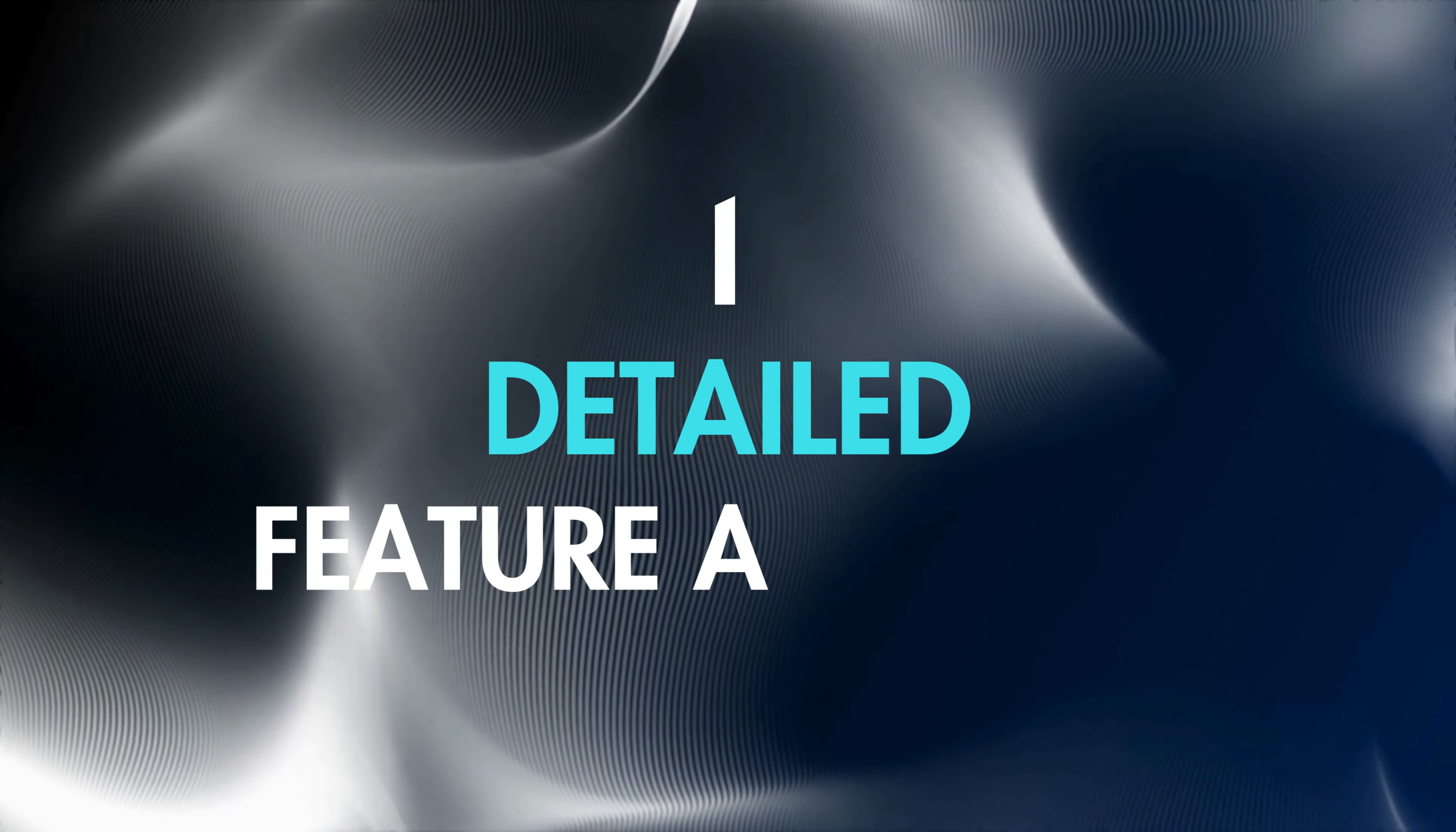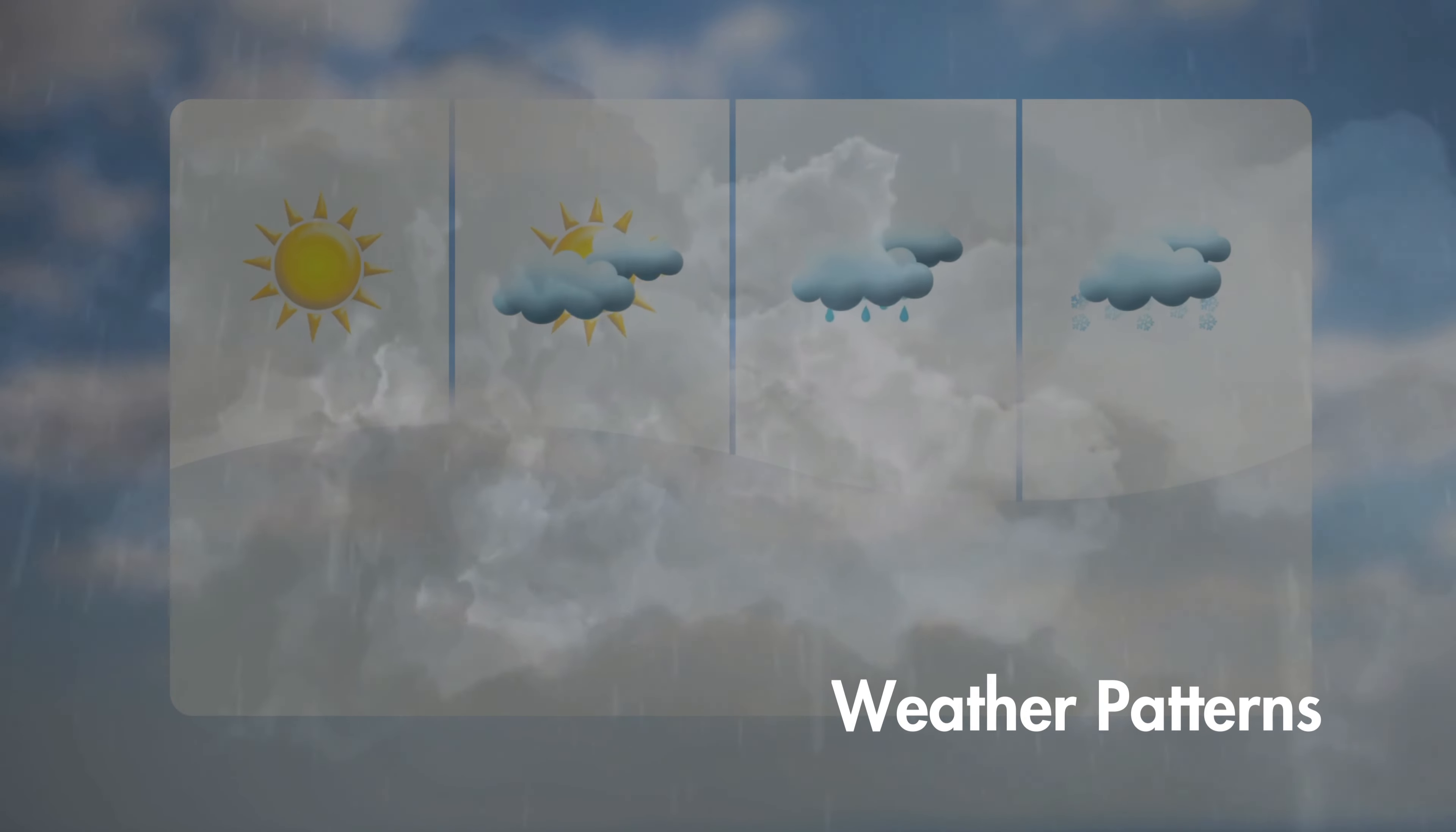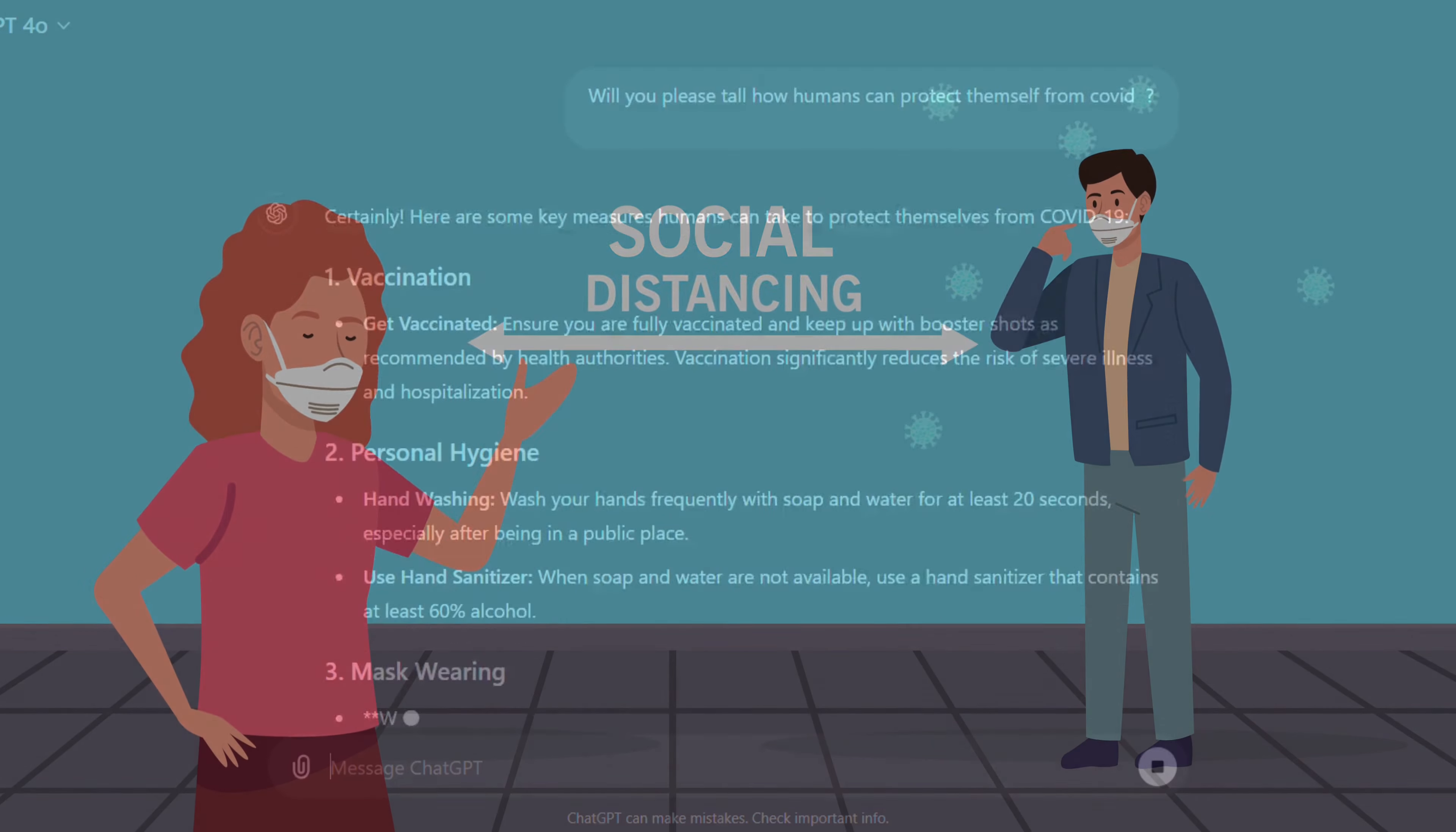Number 1: Detailed feature analysis. AI will tackle challenges we consider impossible today, from global crises to complex scientific mysteries. For example, during a pandemic, AI could analyze medical records and weather patterns to quickly identify effective solutions. Imagine AI quickly identifying the best strategy to contain a new virus outbreak and coordinating global efforts to manage it.